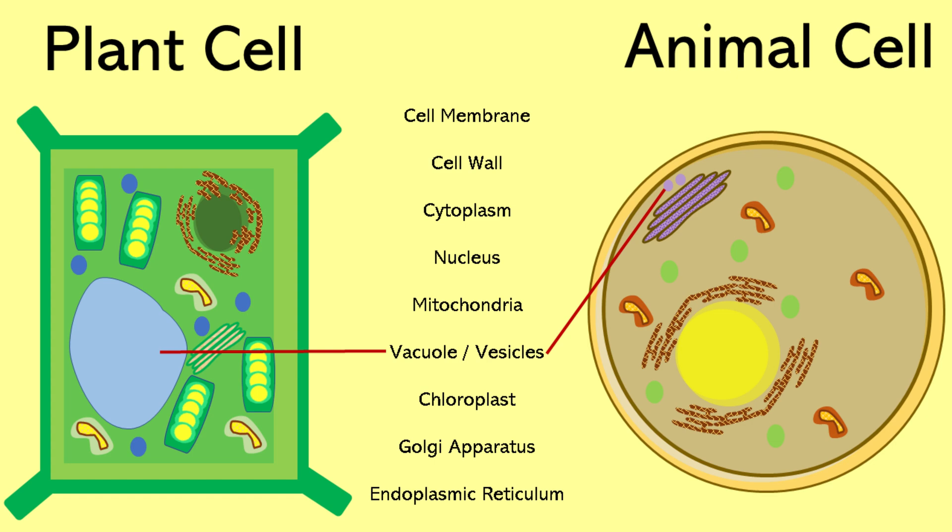Here is another organelle called the vacuole. In animal cells, this is usually referred to as vesicles. It functions mainly in storage of nutrients, waste products, and other materials the cell might need. In plant cells, it also works to support the structure of the plant. Vacuoles are generally larger in plant cells, often occupying most of the cell's interior.